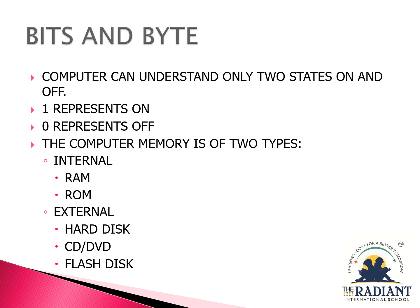Let's move ahead to bits and bytes. A computer can understand only two states of information, that is on and off. One represents on and zero represents off. These two digits, zero and one, are also called binary digits. We can also say that computer understands binary language, which is made up of only two digits, that is zero and one. The amount of data and instructions a computer can store is measured in bytes.